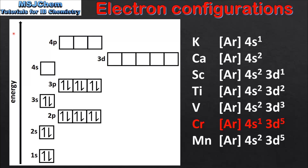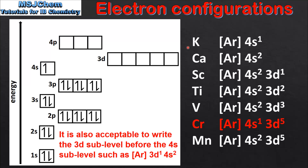Next we have the first 7 elements in period 4 starting with potassium. Note we are now using the symbol for argon to represent the core electrons. So for potassium we have Ar4s1, and we put one electron in the 4s sub level. Next we have calcium which is Ar4s2, and we put the second electron in the 4s sub level. From scandium to zinc we are now filling the 3d sub level, so the electron configuration for scandium is Ar4s2 3d1, and we add one electron to the 3d sub level.